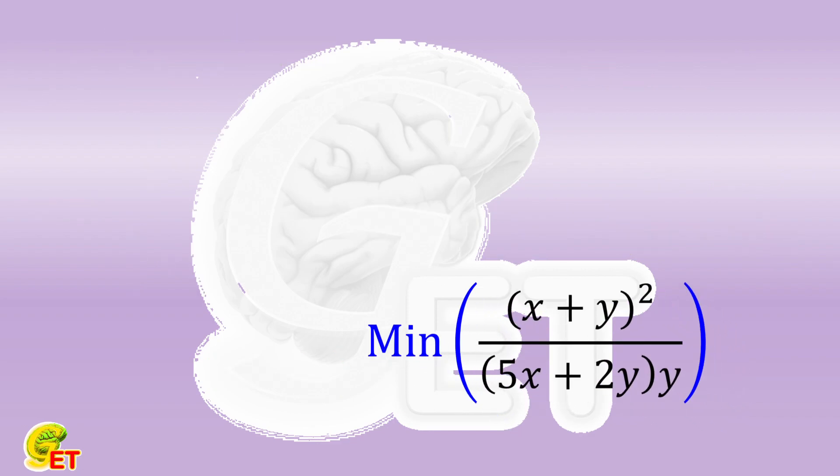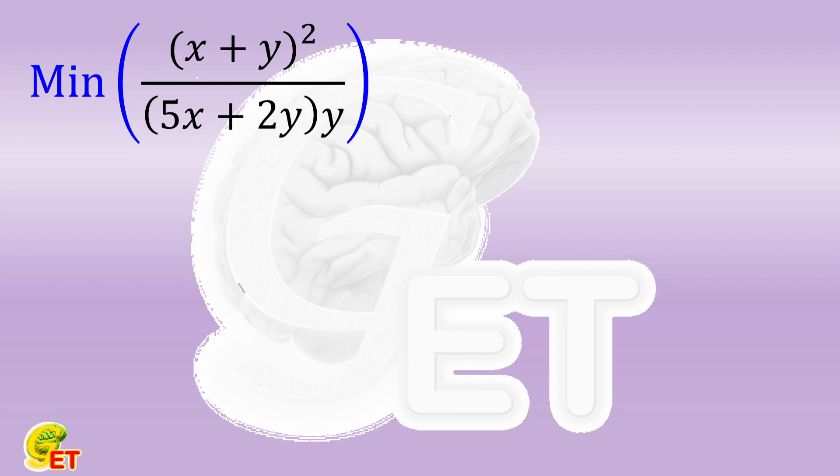Now let's calculate this minimum value. This is a fraction. If we keep the numerator unchanged, the larger the denominator, the smaller the final result. How big can the denominator be?